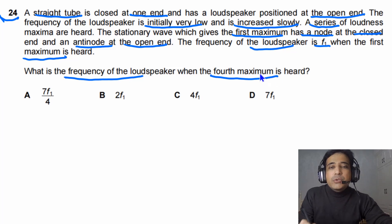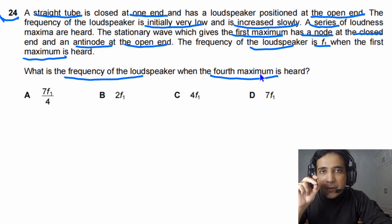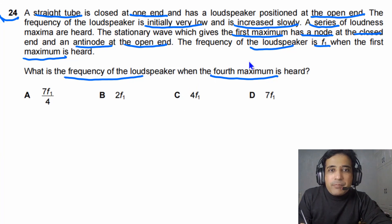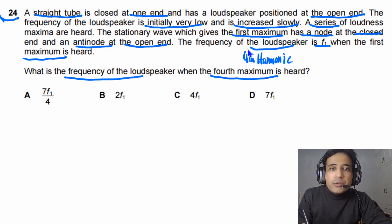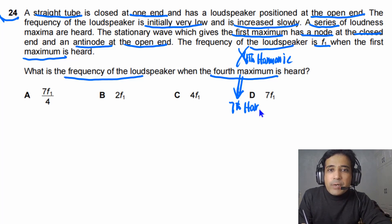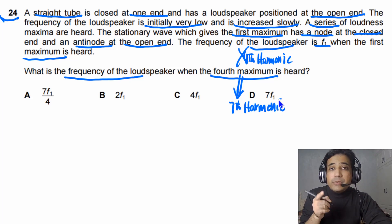You need to understand that the 4th maximum and the 4th harmonic in a one-end-closed pipe are different — the 4th maximum is not the 4th harmonic. In fact, the 4th maximum in a one-end-closed pipe is actually the 7th harmonic. This is an important point you need to understand.